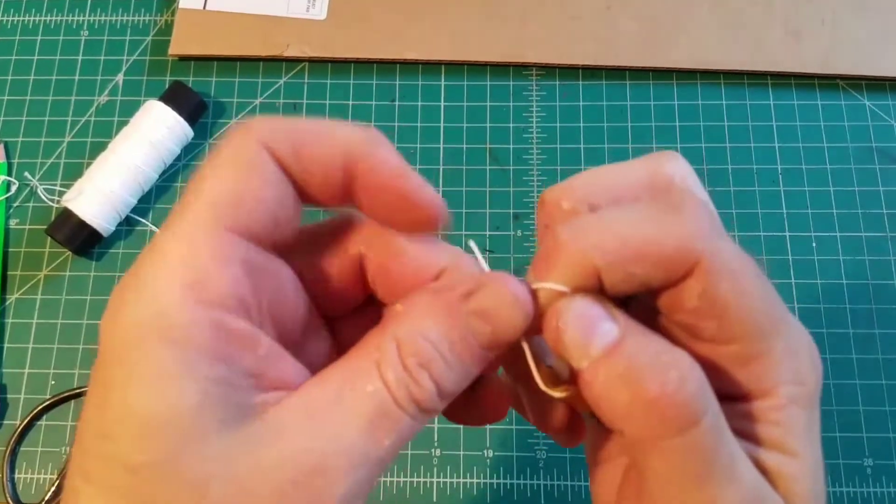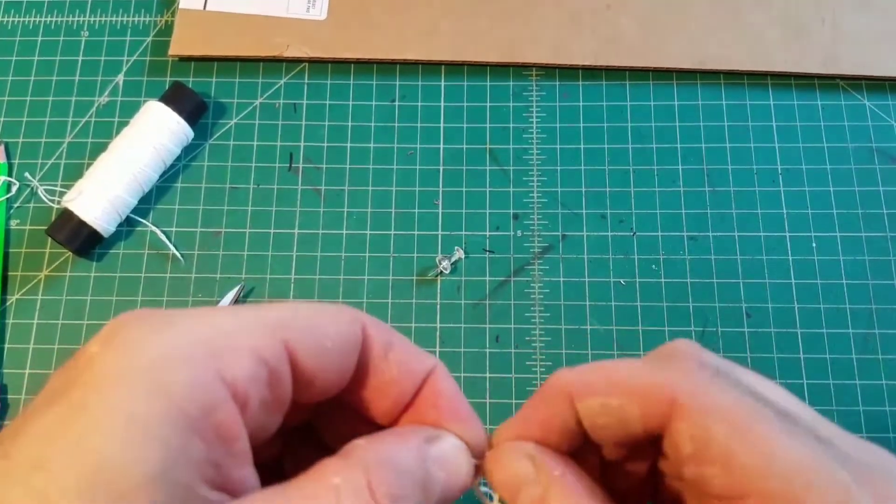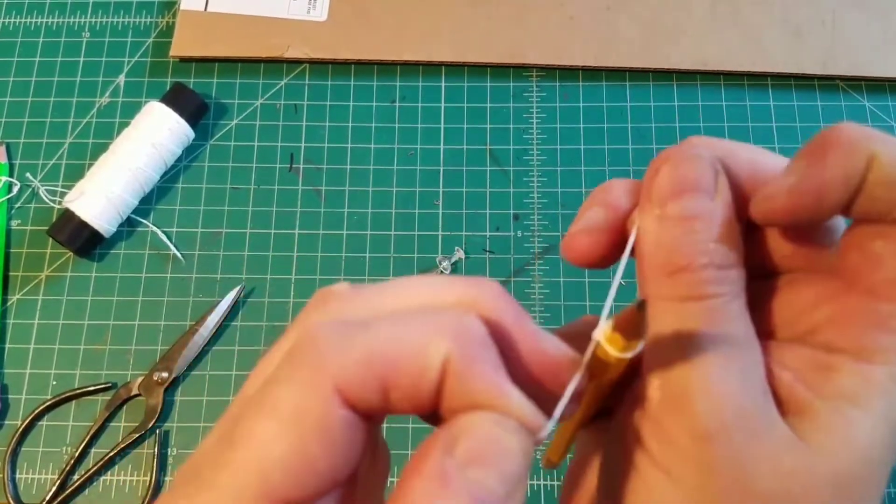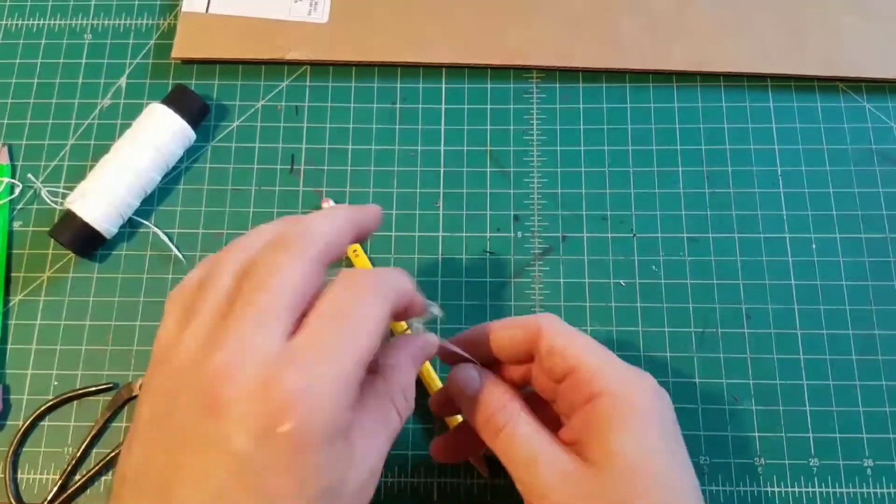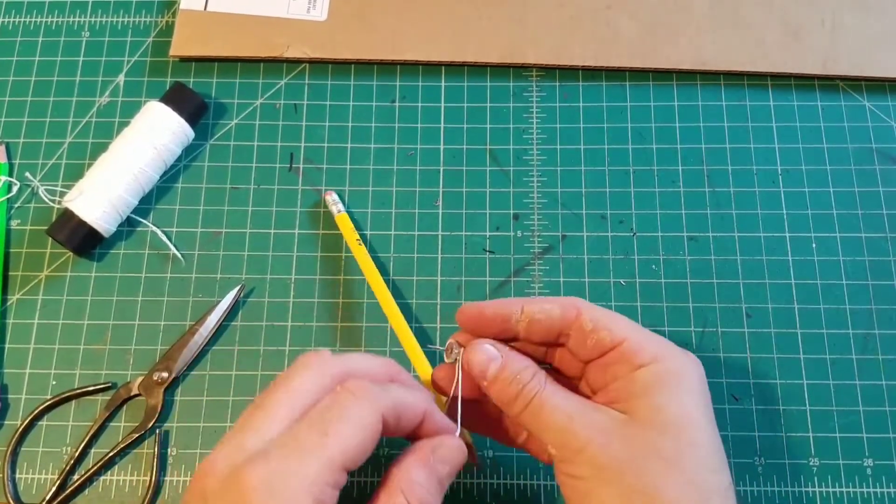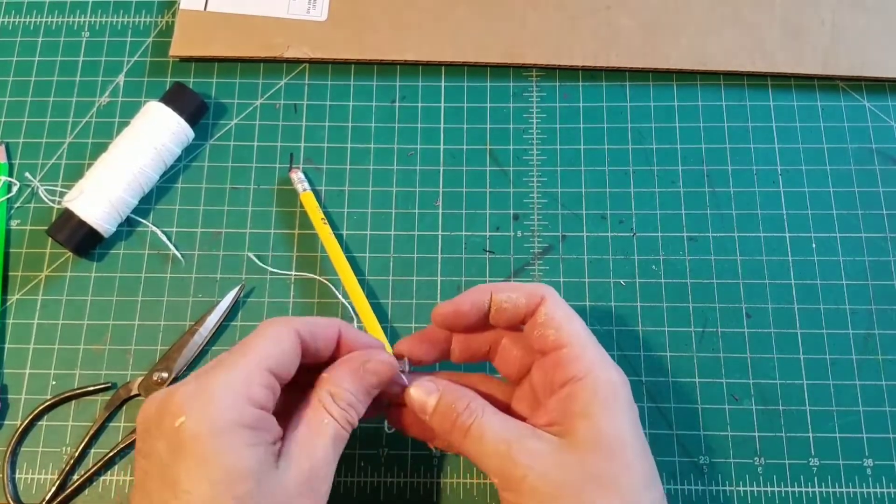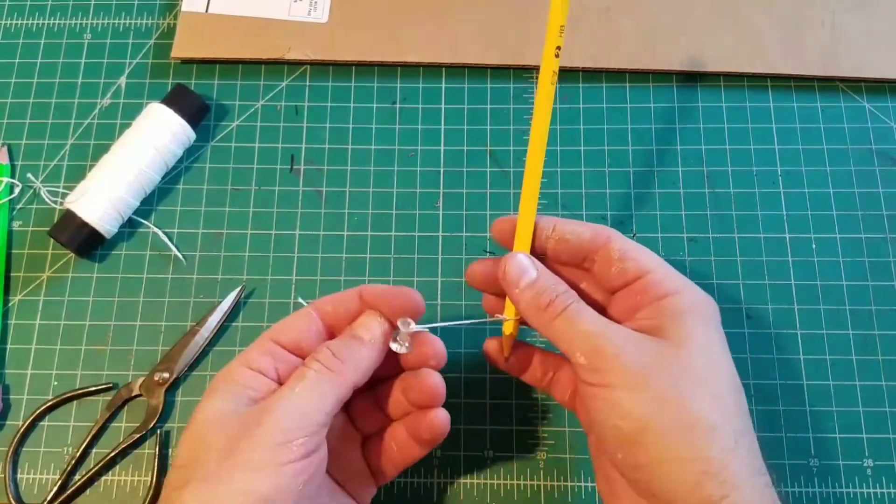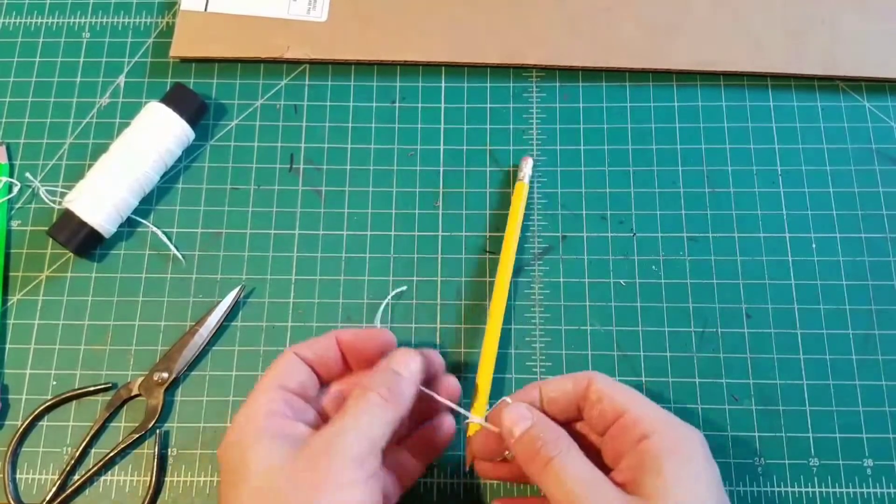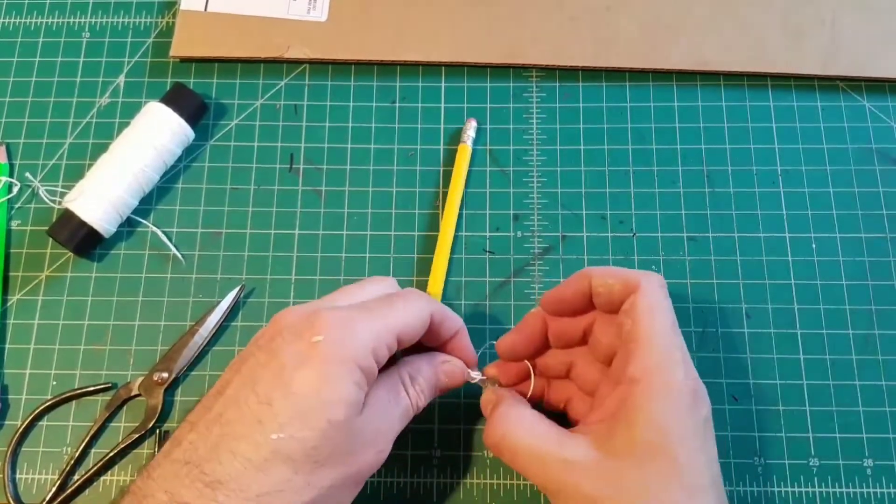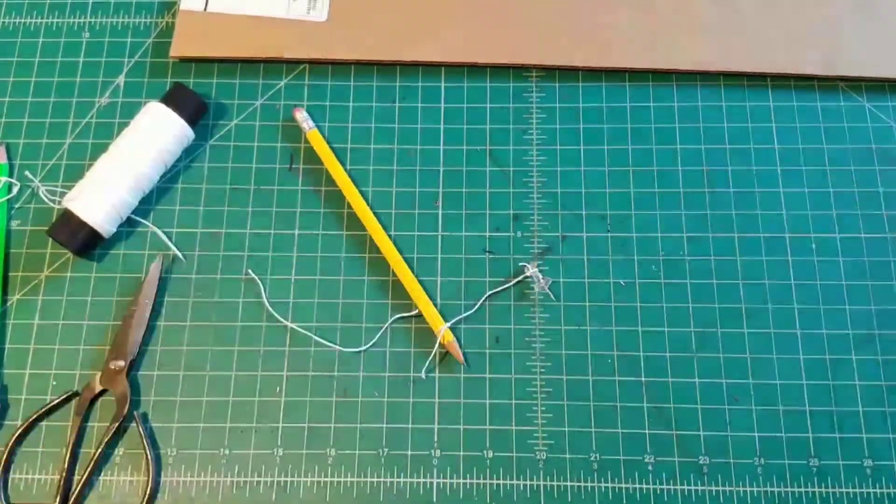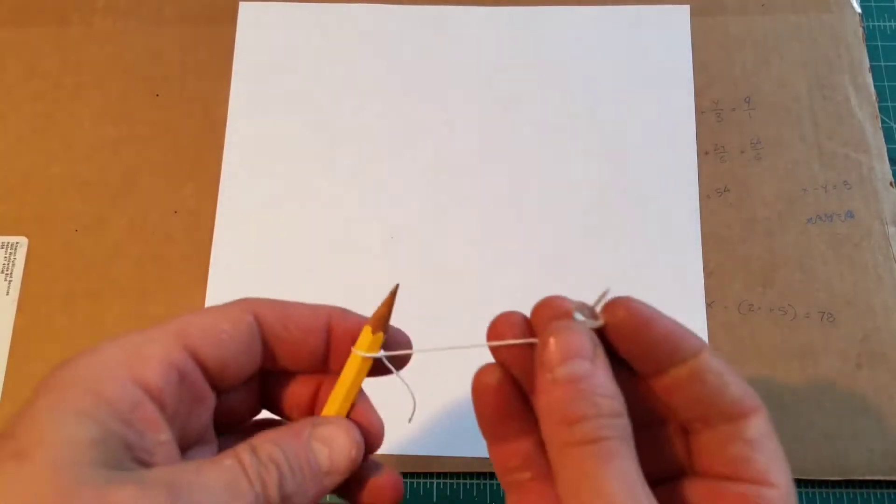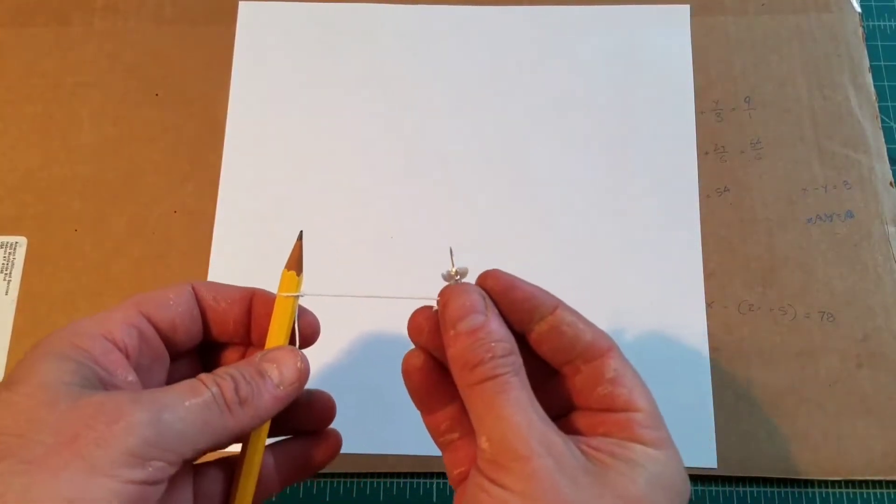Snug, but not too tight. You don't want it so tight that the pencil can't spin in the string. You're going to take your thumbtack and you're going to tie it. Now you don't want to tie this tight either, and you also don't want it super long. I would say 2 inches is a good length. This is going to be the radius of your circle. Now, the reason I have the cardboard is because I don't necessarily want to be jabbing my thumbtack into the table or my work surface.